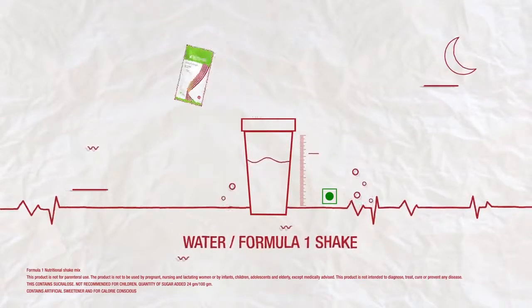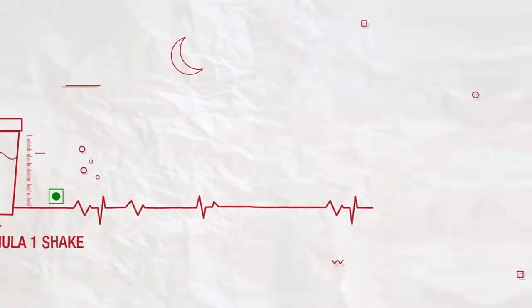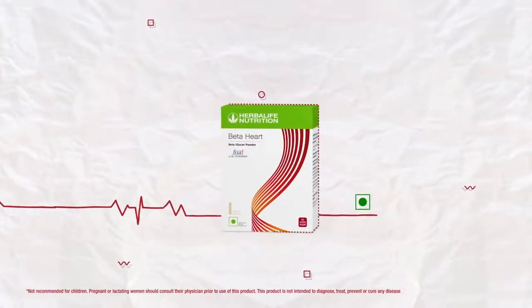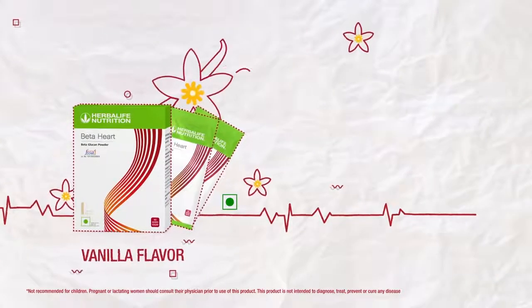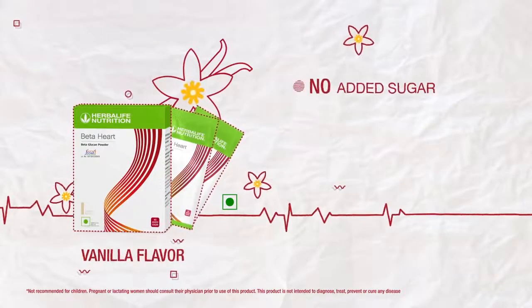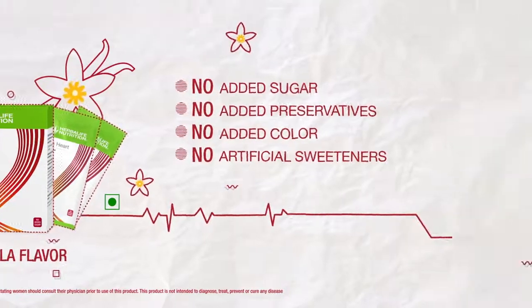Beta Heart is available in easy-to-carry single-serve sachets and comes in natural vanilla flavor. It contains no added sugar, preservatives, color, or artificial sweeteners.